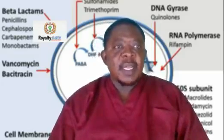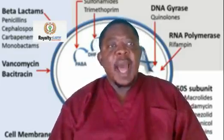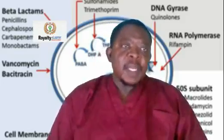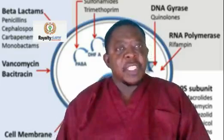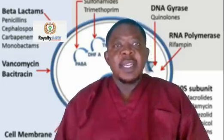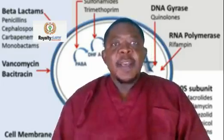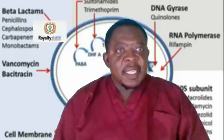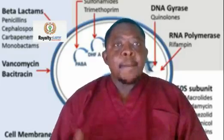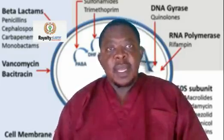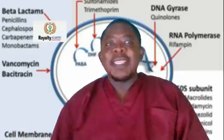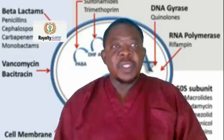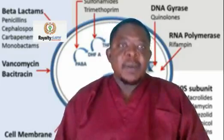Now we can also look at another group of antibiotics known as macrolides. Macrolides have a similar function to aminoglycosides and tetracyclines in that they inhibit the synthesis of proteins by binding to the bacterial ribosome. But they bind to the 50S subunit of the bacteria.